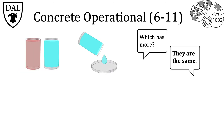This leads into the third stage, the concrete operational stage, where children can now conserve shape, number, and liquid. Looking at the previous problem, children will now identify that even though the size of the container is different, the amount of water between the glass and the petri dish is the same. However, this ability is limited to mental observations of real or concrete objects and events. In this phase, they still cannot understand abstract ideas and reasoning.